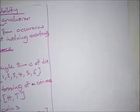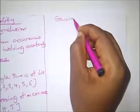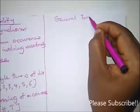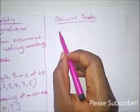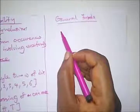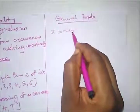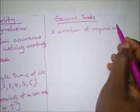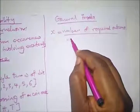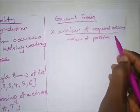Now we also have to know the general formula for probability, as there are different events we'll look at. The general formula for probability of an event happening can be given by a numerical value known as x, where x equals the number of required outcomes over the number of possible outcomes.